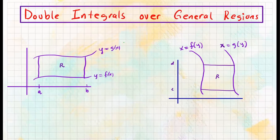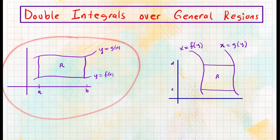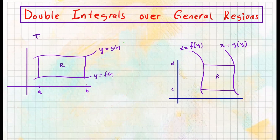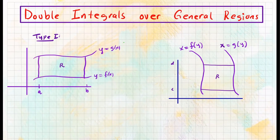Now, let's turn our attention to double integrals over general regions. Here are two types that we're going to discuss. Let's start with the first one — we're going to call this a type 1 region. Suppose you are integrating a surface, a function of two variables, over this particular region, which is bounded by two curves: one on top, one on the bottom, and along the x-axis we have a vertical line. This is our region R that we're going to integrate over.